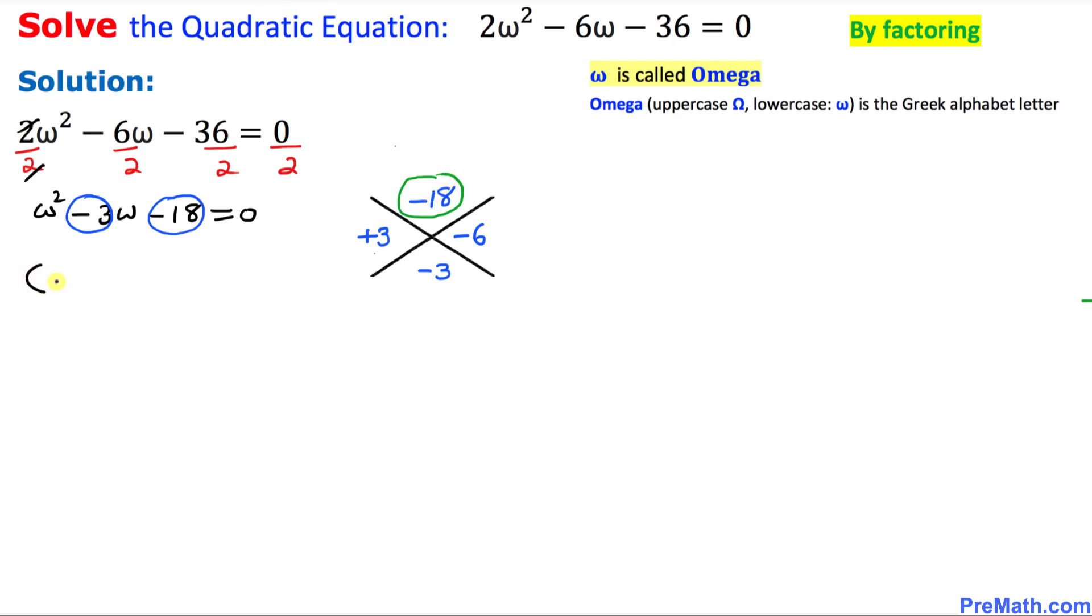In our next step, we're simply going to write down these two parentheses equal to 0. I'm going to put down Omega in both, and here are our two factors. The first one is +3 in the first parentheses and -6 in the second.